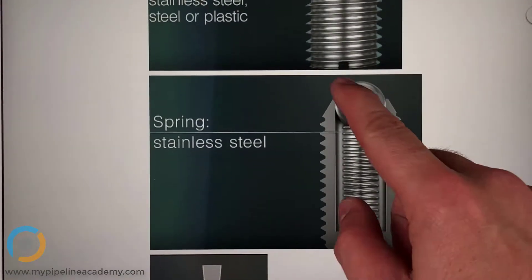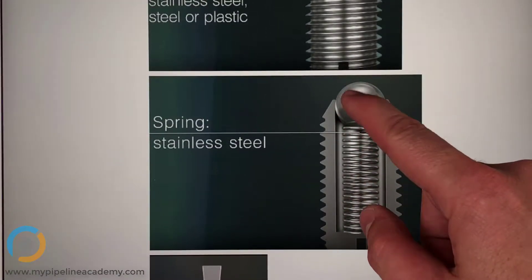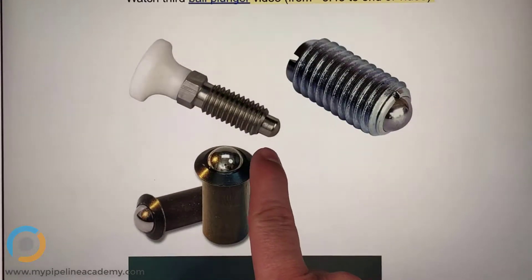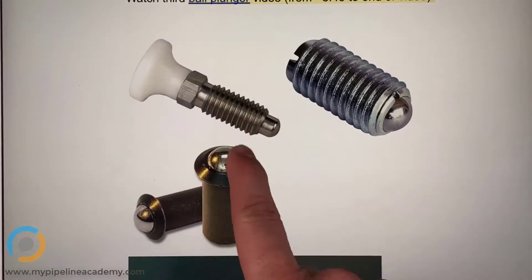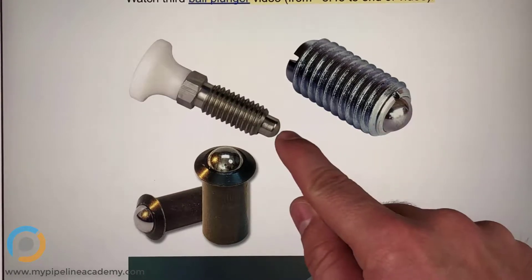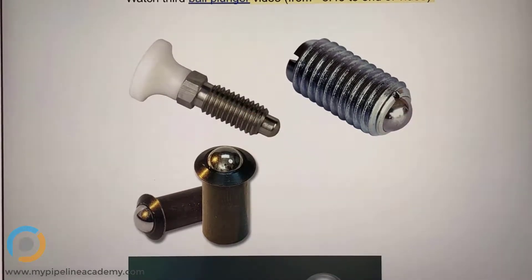The ball plunger is literally a ball. It's just like this, a ball with a spring underneath it. Whereas the retractor is more like this, where it's not a ball. It's more like a plunger. There's still a spring inside there, but it's elongated. It's not just a ball like this. There's a plunger that moves back and forth.